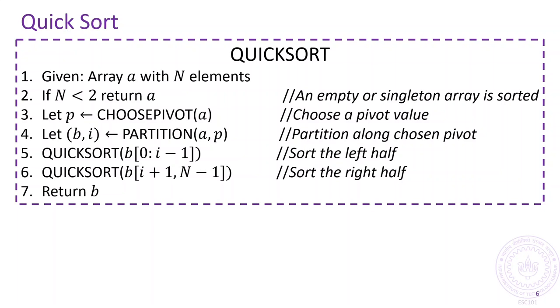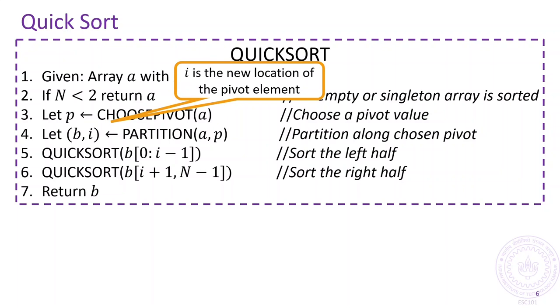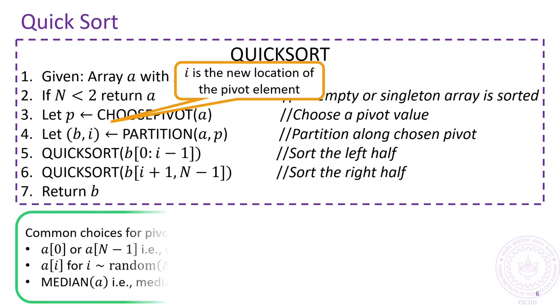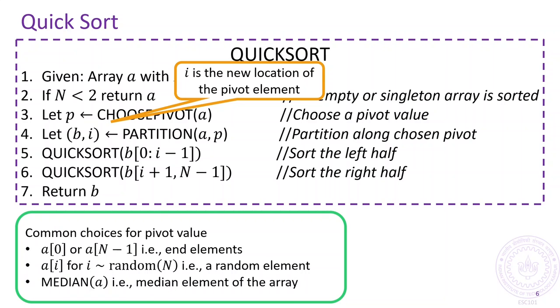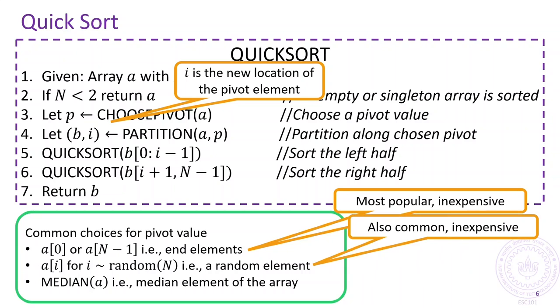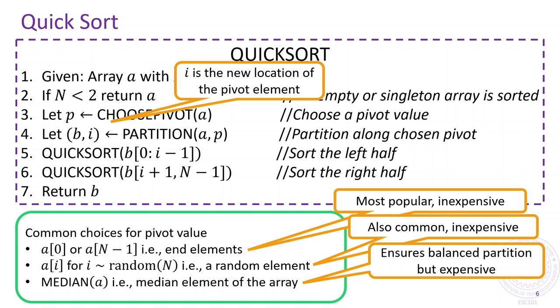Here is pseudocode for the quicksort algorithm. This algorithm uses a partition method which we shall soon describe. The most common ways to choose the pivot element are to either choose one of the end elements or a random element. However, a more expensive way to choose the pivot element is by finding the median.